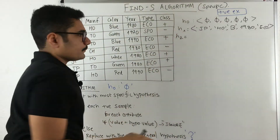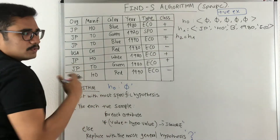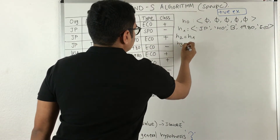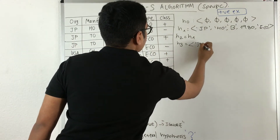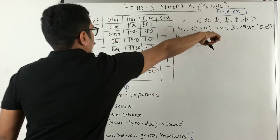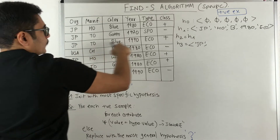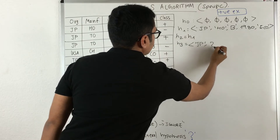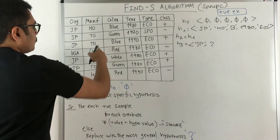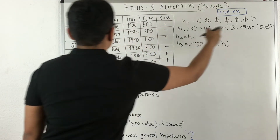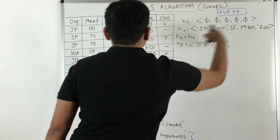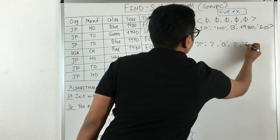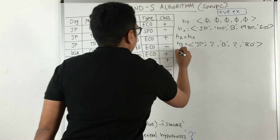The second example is negative, so we ignore it — h2 remains the same as h1. Moving on to h3, the third example is positive. Comparing with h1: origin is JP (same), but manufacturer is Toyota instead of Honda — disagreement, so we place a question mark. Color is blue (same, keep it). Year is 1990 vs. 1980 — disagreement, so question mark. Type is Eco (same, keep it).